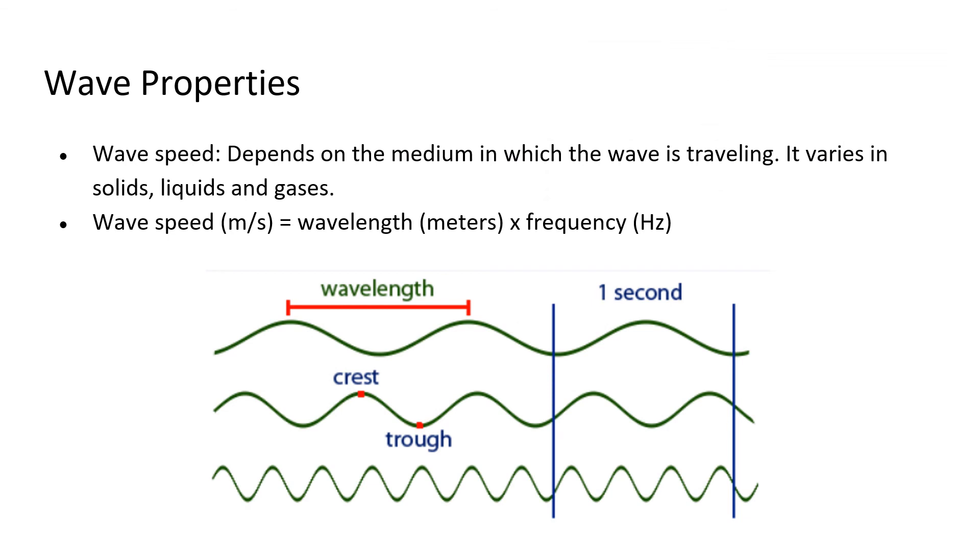Wave speed depends on the medium in which the wave is traveling, and it varies in solids, liquids, and gases. Wave speed in meters per second equals wavelength, which is in meters, times the frequency, which is hertz.